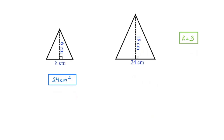I calculated the area of the original triangle by taking the base times the height and dividing by 2. I now want to find the area of my new triangle. I know that I have a linear scale factor of 3 because my new base is 3 times as large as my original base. I now want to determine the area of my new figure, which is going to be similar to the original figure because I'm applying that scale factor to both the base and to the height.